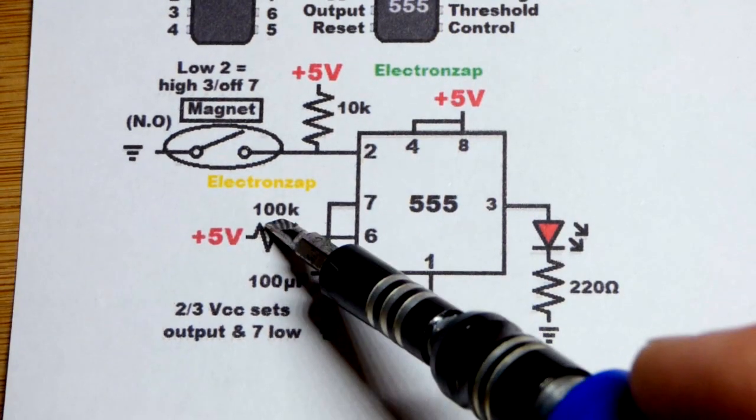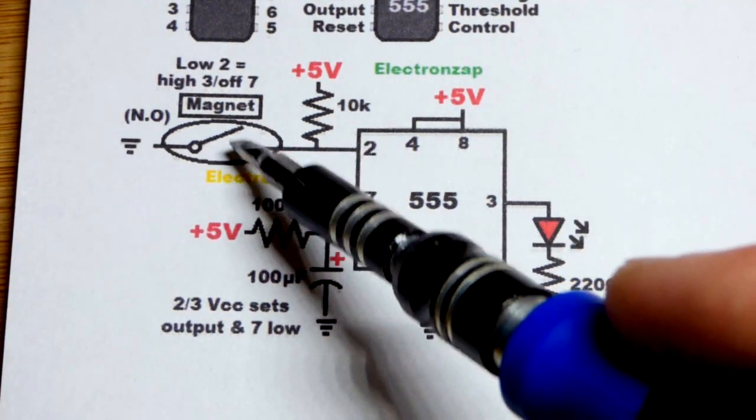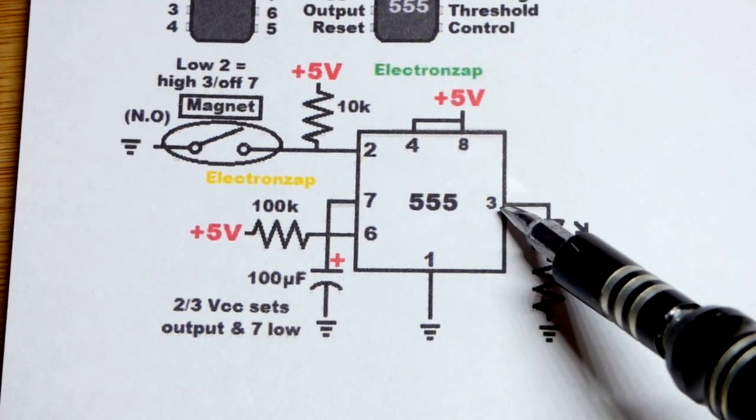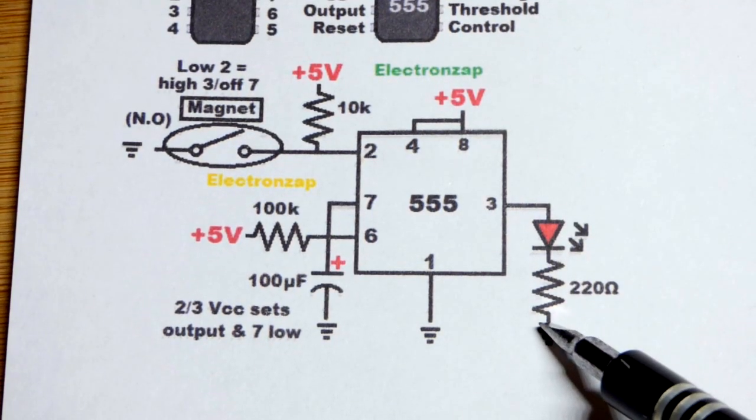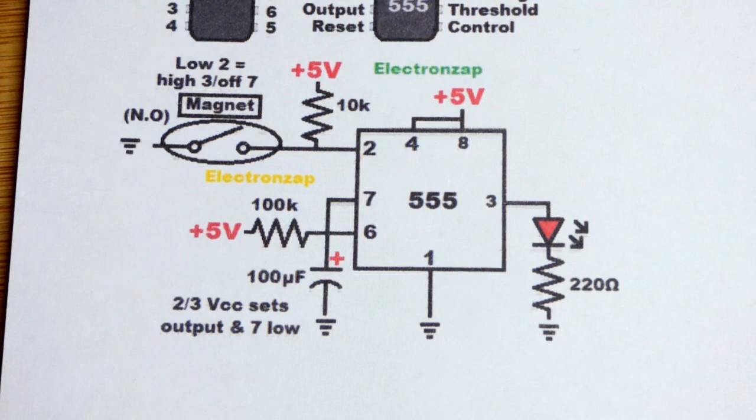In any case the LED will be on, output will be high for a period of time set by the capacitor and the resistor. As long as we open up the switch again so that pin number two is high, then once that time is up the output will go back low and stay there again until we close the switch, give a low input to pin two.